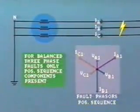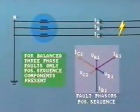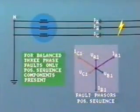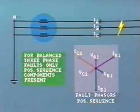For study of balanced faults, such as a three-phase short circuit or three-phase to ground, only these positive sequence components are needed. But what about unbalanced faults, such as a phase-to-phase fault or a phase-to-ground fault? As we'll see, other components are needed in order to analyze these unbalanced system conditions.